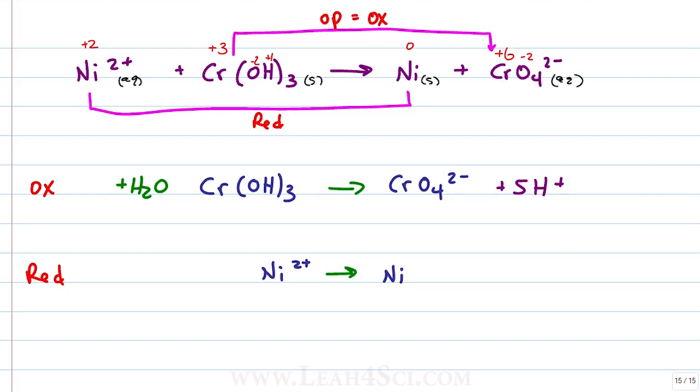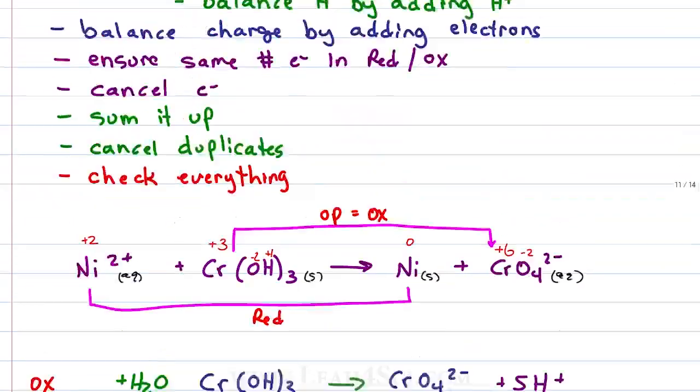Let's move on to the reduction half. Reduction is easy, we just have 1 nickel going to 1 nickel, no oxygens, no hydrogens, atoms are balanced.